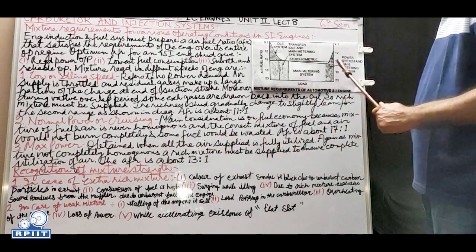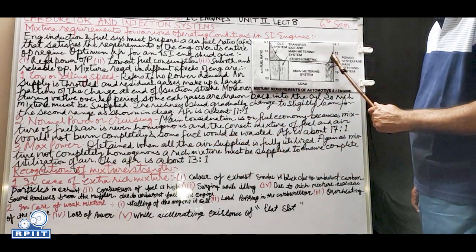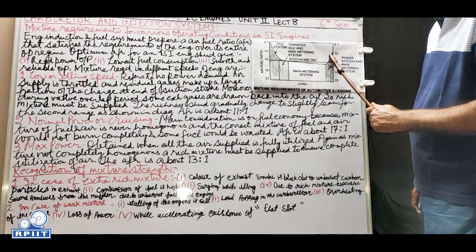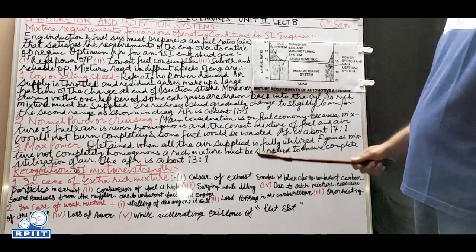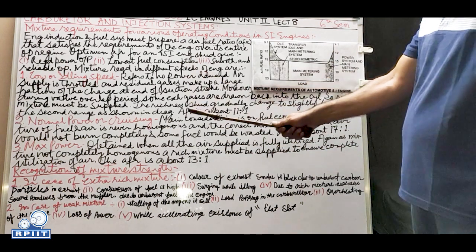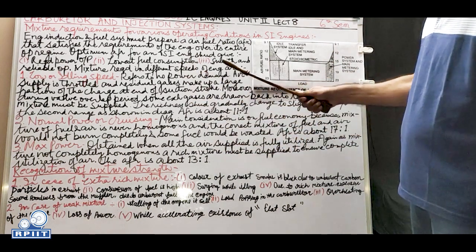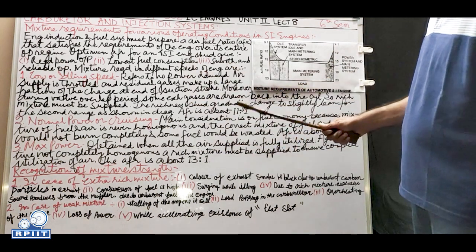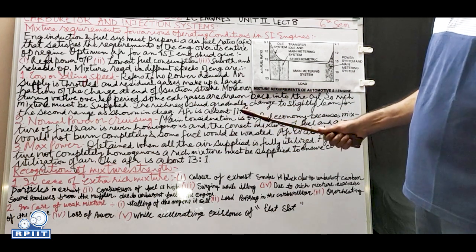At maximum power, the average AFR is about 13:1. So these are the three operating speeds - idling, cruising, and maximum power - and the various average AFRs with their reasons.